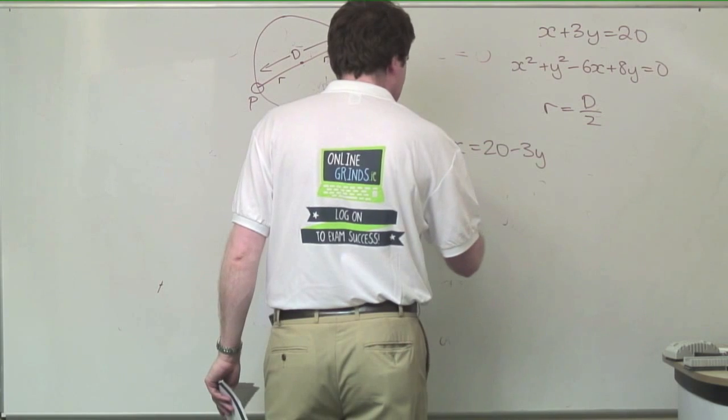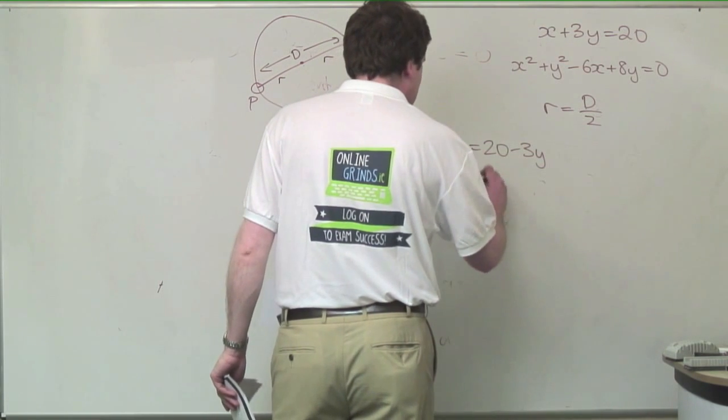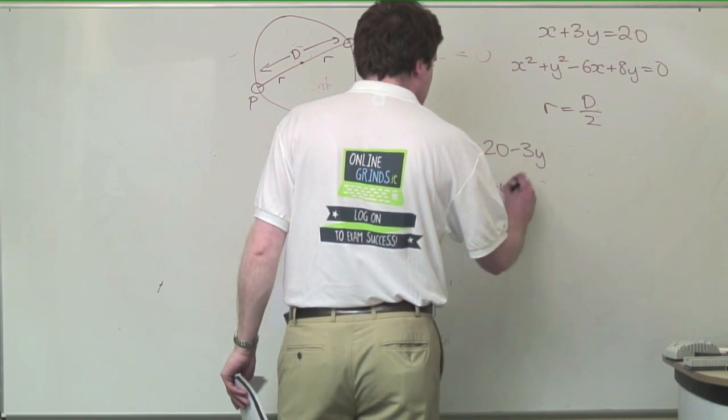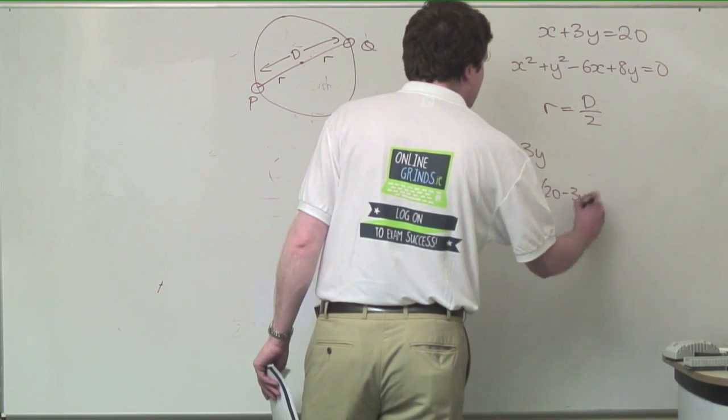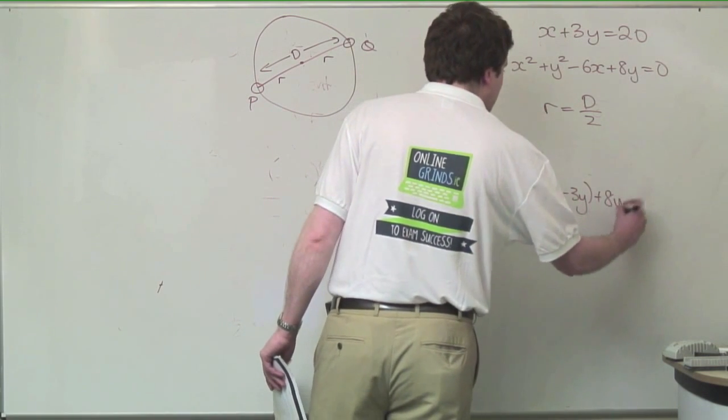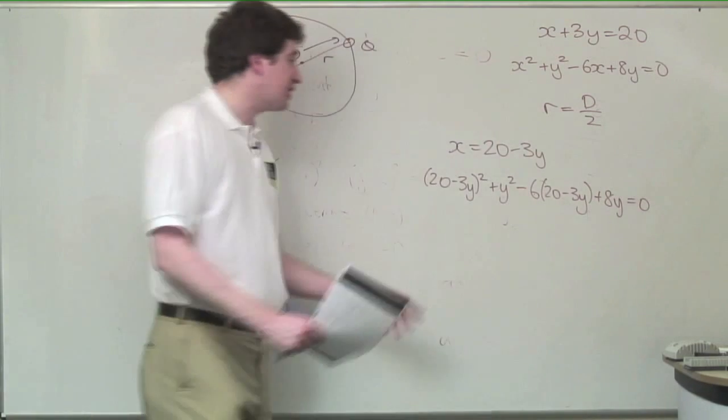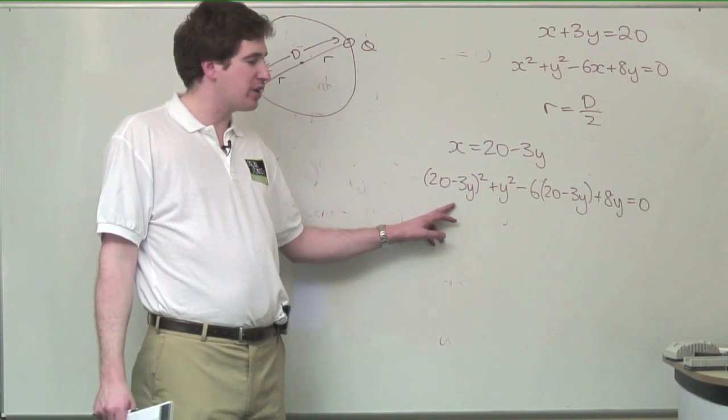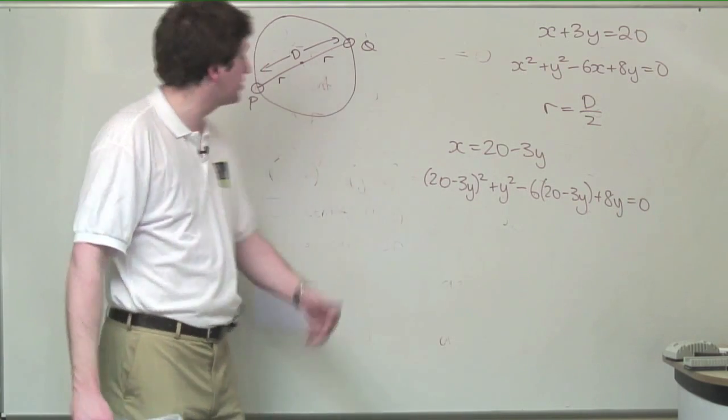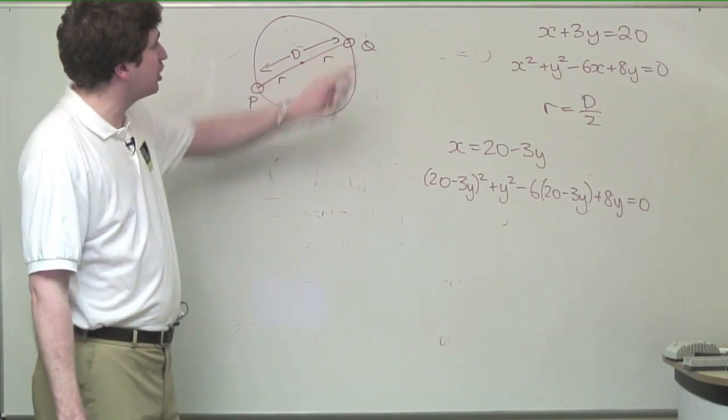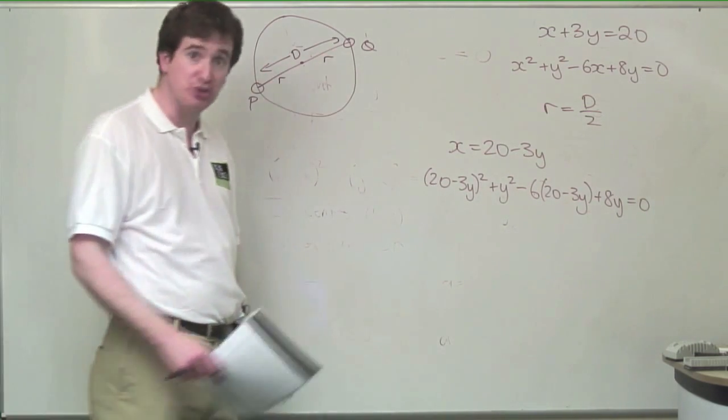So we get 20 minus 3y all squared plus y squared minus 6 times 20 minus 3y plus 8y equals 0. This will give me a quadratic in y. I will get two roots for y, I will find two corresponding x values, and they'll be my p and q values for the diameter of this new circle.